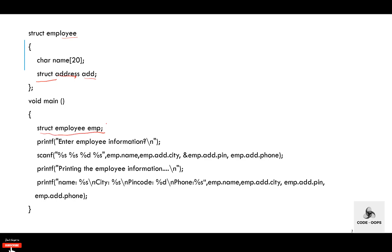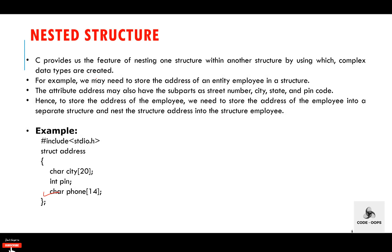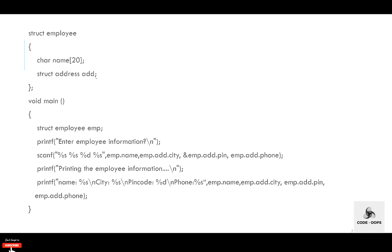Then inside the main function, declare a structure type variable. Struct is the keyword, employee is the name of the structure, and emp is the name of the structure variable. With the printf function, display the message 'enter employee information', and with the scanf function, input the details of the employee. To access the data members of a structure, use the dot operator: emp.name, then emp.add.city. Address may also have subparts such as city, pin, and phone number — so emp.add.pin and emp.add.phone_number.